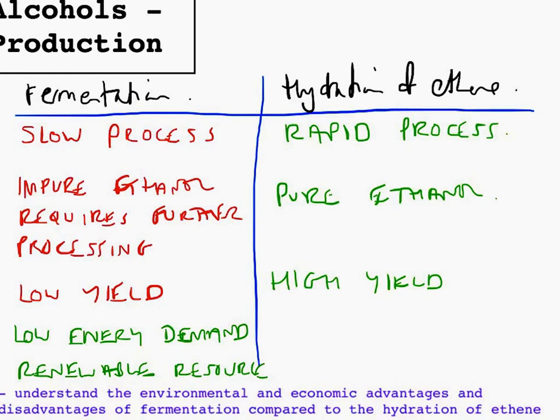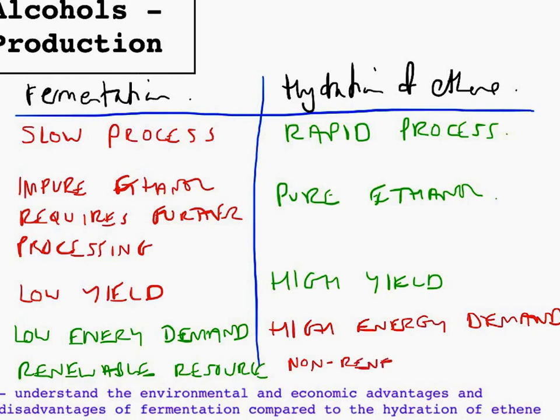Whereas hydration of ethene has a high energy demand, you need a really high pressure and a high temperature. And there are other considerations regarding that, so there's the safety of having that high pressure, which is compromised. And then hydration of ethene uses ethene, which is obtained via crude oil. So this is a non-renewable, or non-sustainable process, so non-renewable resources used.